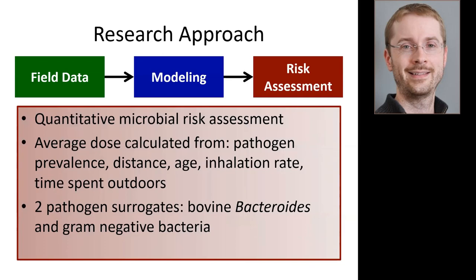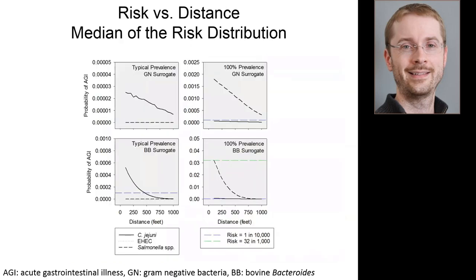We also had to use pathogen surrogates because pathogens were not very common at the farms we used, so we estimated their transport behavior from non-pathogenic bugs. The two surrogates were bovine bacteroides and gram-negative bacteria — one more conservative with respect to public health, one more realistic. Since we're still making predictions using a model, these four different panels in the results reflect four different assumptions related to model uncertainties. Unfortunately, we can't give a single risk value at any given distance — only a range.